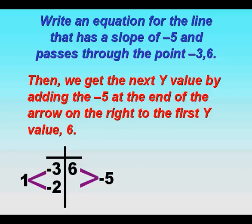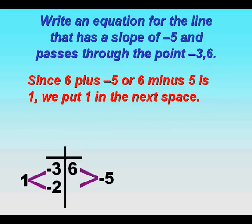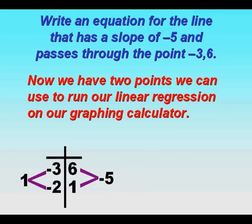And then on the right side we have 6. We add negative 5 to 6, and we get 1. And so now we have 2 points we can use to run our linear regression.